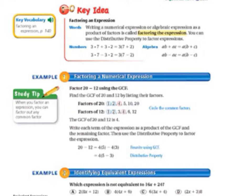Writing a numerical expression or algebraic expression as a product of factors is called factoring the expression. You can use the distributive property to factor expressions. In numbers, it gives you an example, and then it also gives you an example using letters or using algebra.